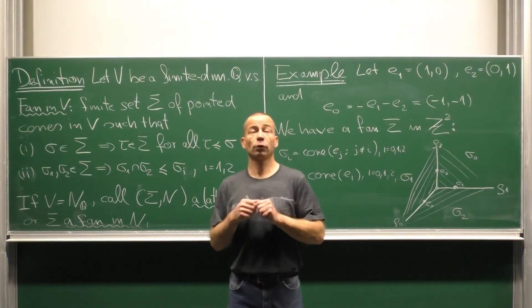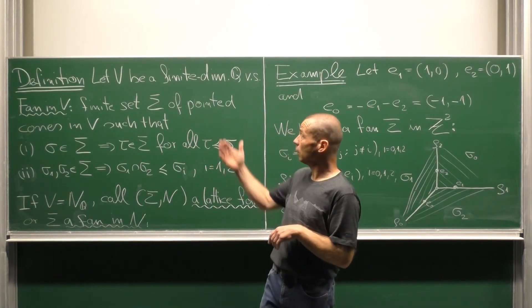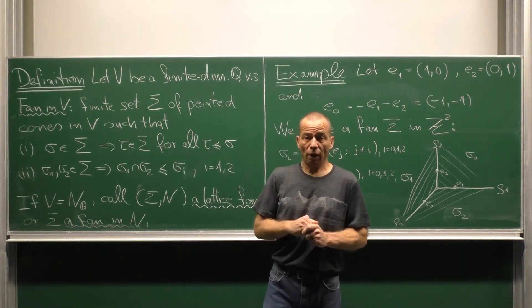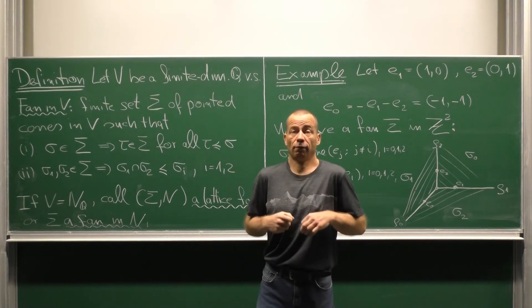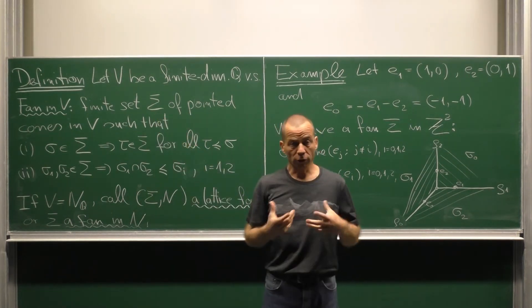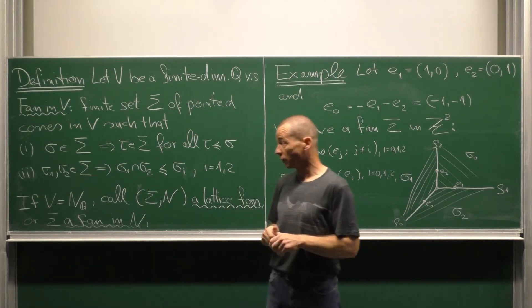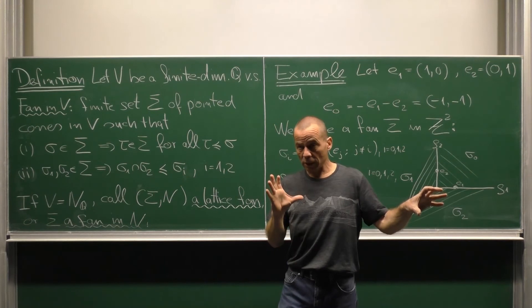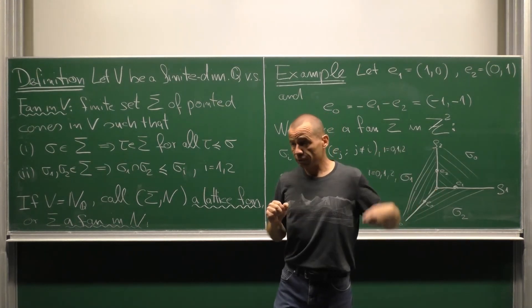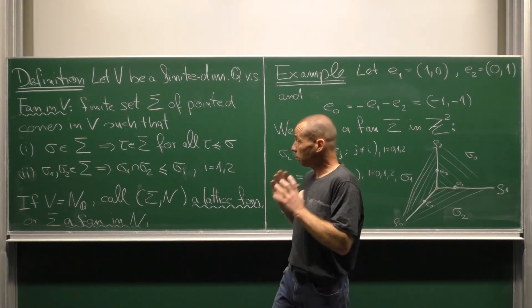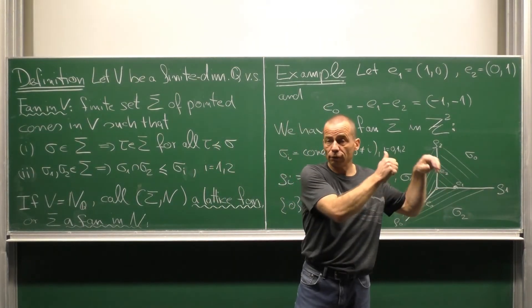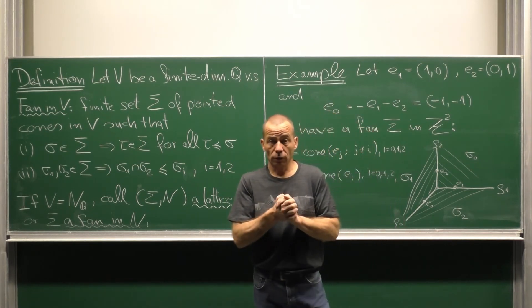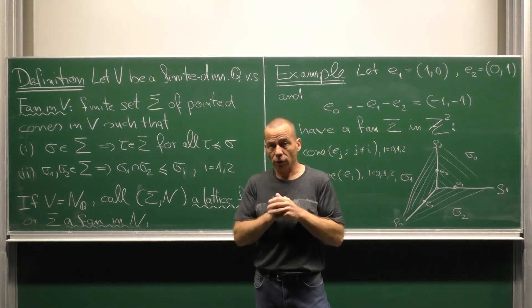We are ready for the concept of a fan in a rational vector space. So let v be a finite dimensional rational vector space. A fan in v is a finite set big sigma of pointed cones in v such that whenever I have an element of big sigma, then also all the faces of this element belong to sigma. Whenever I have two cones inside sigma, then the intersection of these two cones is a face of each of these cones.